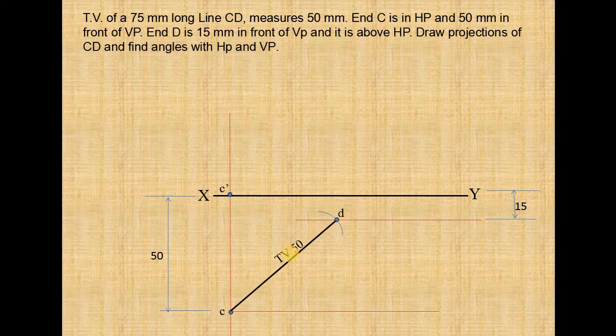Now similarly you take true length 75mm. You take 75mm as radius, C as center, cut the arc on this line like this and name it as d2. Now join C and d2. This is our true length 75mm.